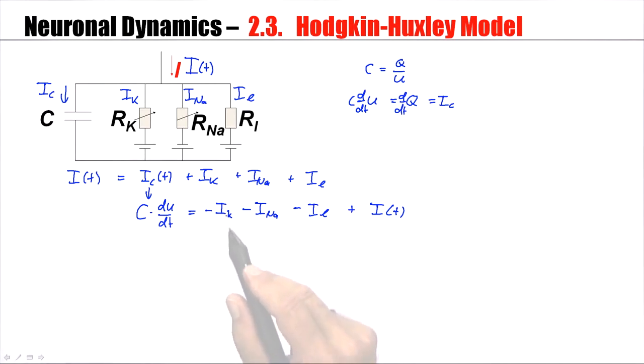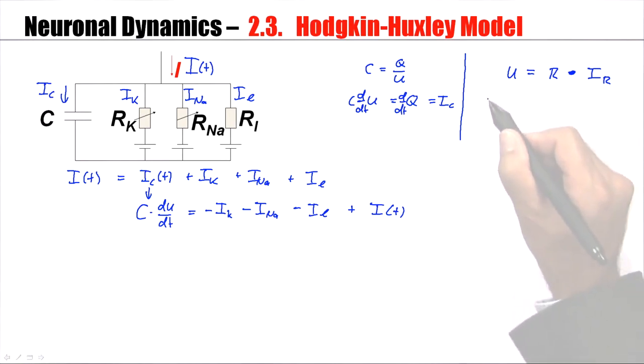Now, what can we say about the currents passing through the channels? In the model, this corresponds to currents passing through the resistors. Let's take one of the resistors. From Ohm's law, we know U, voltage equals resistance times resistive current, the current passing through the resistor. We are interested in the resistive current. So, we have IR equals 1 over R times U.